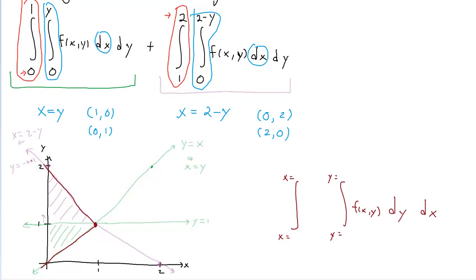X is just going to go from 0 to 1, because this is the point 1, 1. So x is 0 to x is 1. Now we have to find what the y bounds are. Well, y equals x, and y equals negative x plus 2. And since we're doing this in the traditional fashion, the lower bound is going to be y equals x. And the upper bound is going to be minus x plus 2.